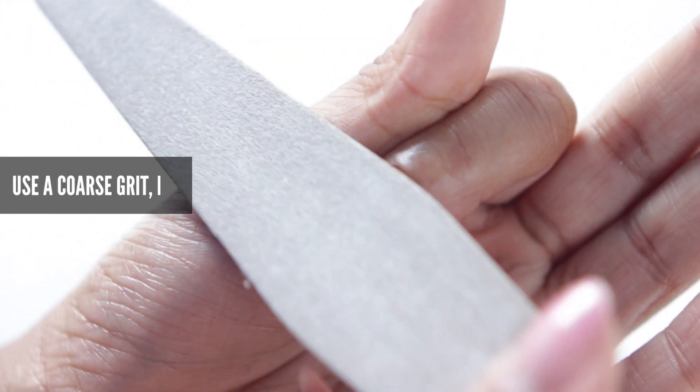So basically all you have to do is remove the shine from your nails and don't forget to break the seal around the free edge also.